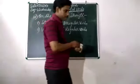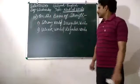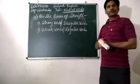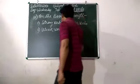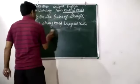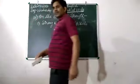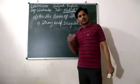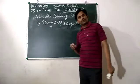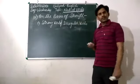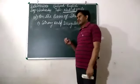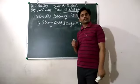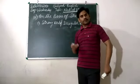Here we will discuss strong verbs and weak verbs. Do you know verbs have their own forms? There are four forms of verbs: present form of verb, past form of verb, and present participle form.